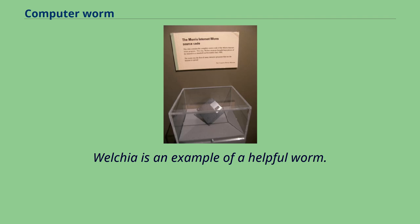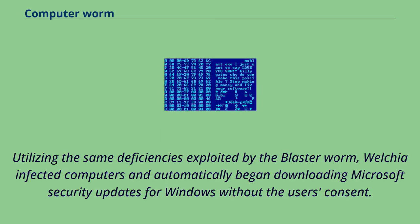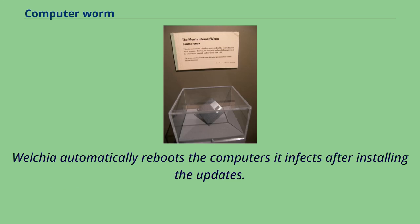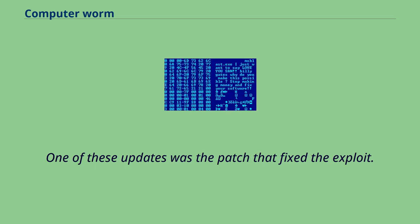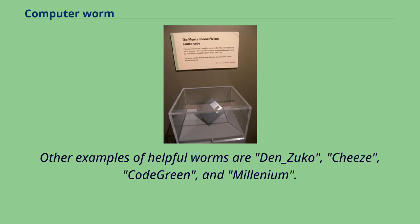Utilizing the same deficiencies exploited by the Blaster worm, Welchia infected computers and automatically began downloading Microsoft's security updates for Windows without the user's consent. Welchia automatically reboots the computers it infects after installing the updates. One of these updates was the patch that fixed the exploit. Other examples of helpful worms are Den Zuko, Cheese, Code Green, and Millennium.